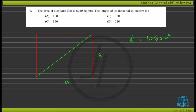The square has side A and A with a 90-degree angle. Taking the diagonal as hypotenuse, the diagonal equals root of A squared plus A squared. This gives us root of 2A squared, and the area A squared equals 5.